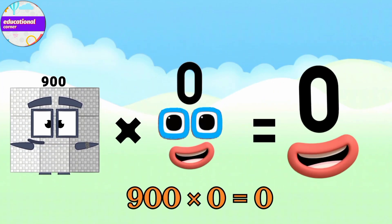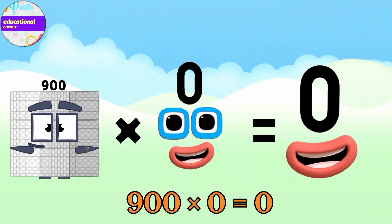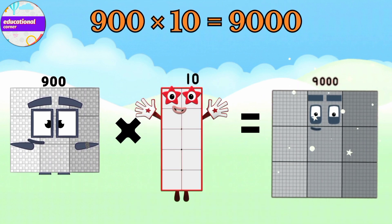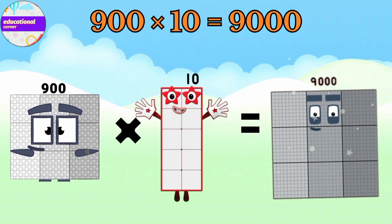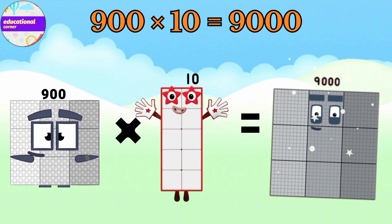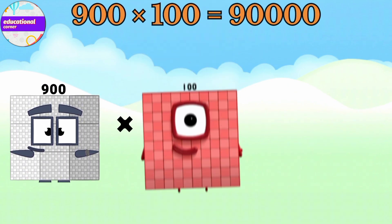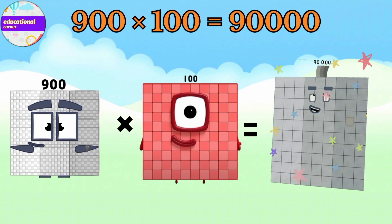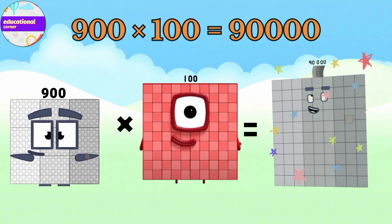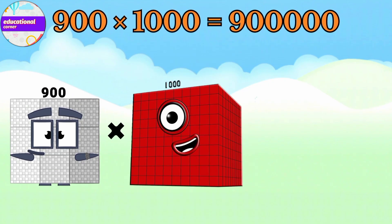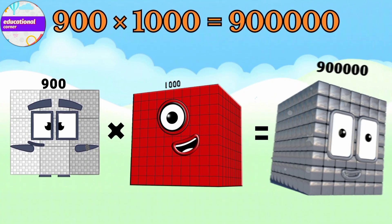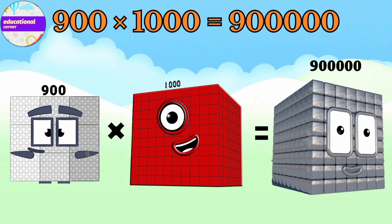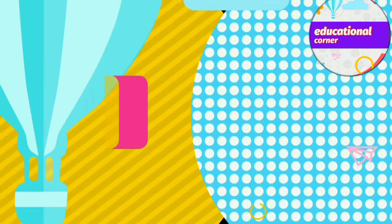900 x 1000 equals 900,000. 900 x 1000 equals 900,000. 900 x 1000 equals 900,000.